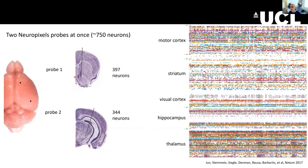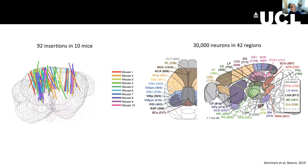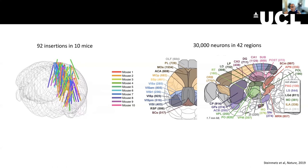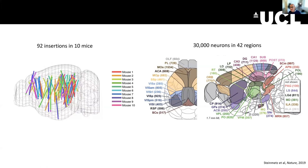Nick extended this work by implanting multiple probes — usually two at a time — across multiple mice, recording from about 30,000 neurons in 42 brain regions while the mice were doing a specific behavioral task. I won't tell you anything about the findings, but this kind of work set a new standard for how we do electrophysiology during behavior to try to understand the brain as a whole.